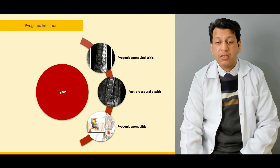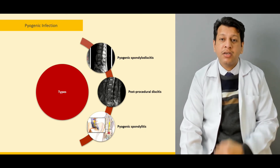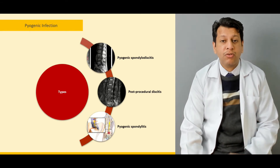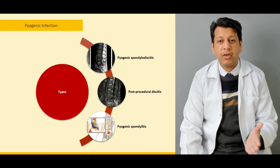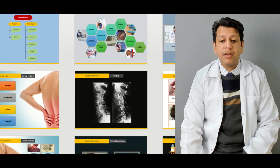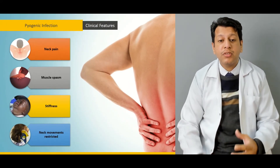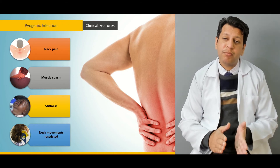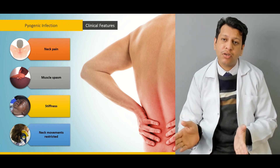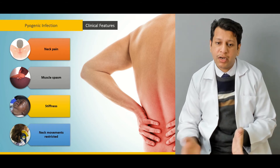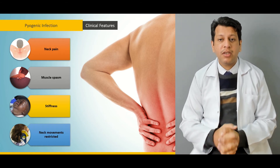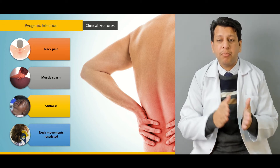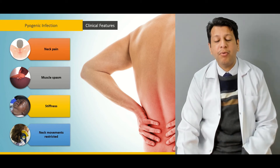Then we're moving on to the different types of pyogenic infection, discussing in detail the criteria which define them. From there we'll move on to the clinical features, as there are certain features which differentiate acute pyogenic osteomyelitis from chronic non-pyogenic tuberculous osteomyelitis, discussing what features on history and examination help differentiate a pyogenic from a non-pyogenic form.